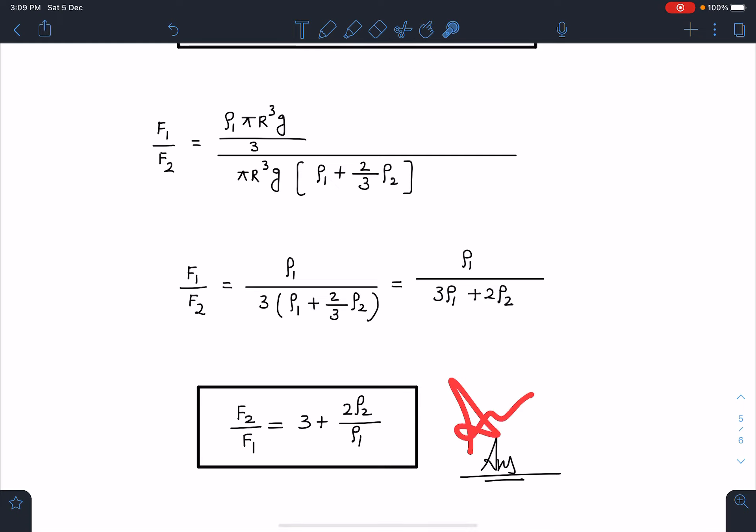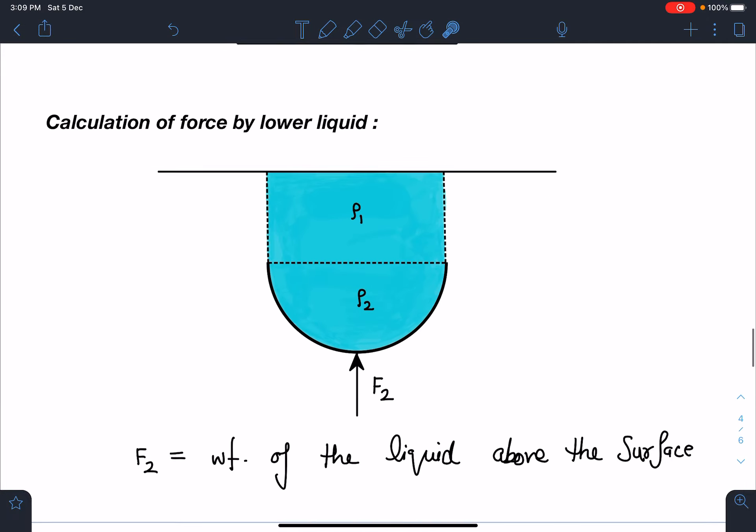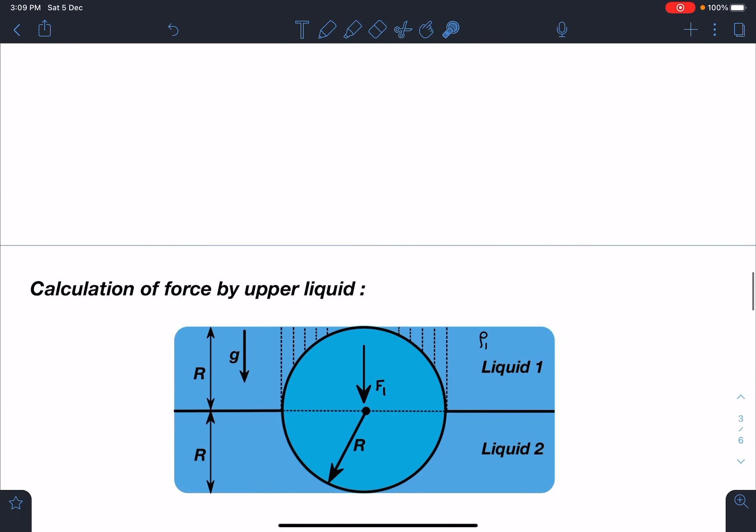You can verify when rho 1 is equal to rho 2, this ratio becomes 5, which I have been discussing earlier in one of my videos. I hope this concept is clear and I hope most of you have got this question correctly.